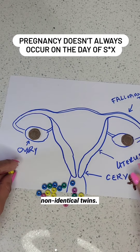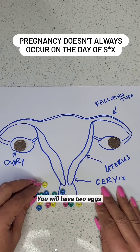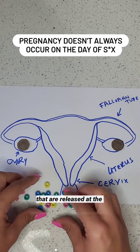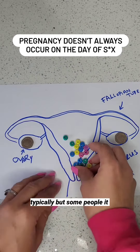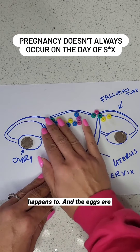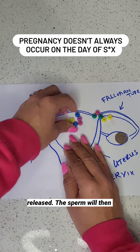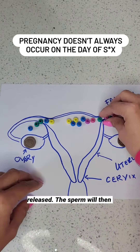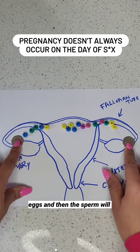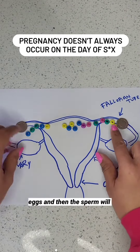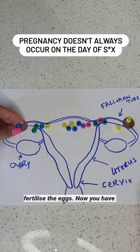Now in the case of twins — non-identical twins — you will have two eggs that are released at the same time. It doesn't happen typically, but it does happen to some people. The eggs are released and the sperm will hover around trying to find the eggs, and then the sperm will fertilise the eggs.